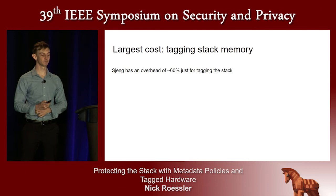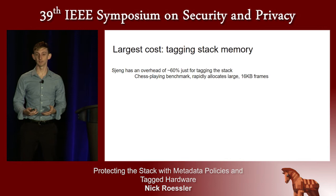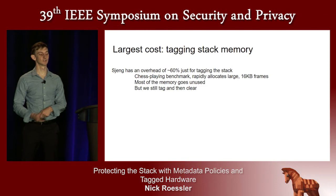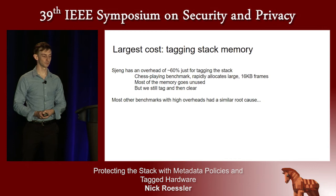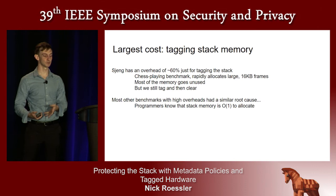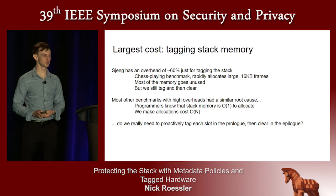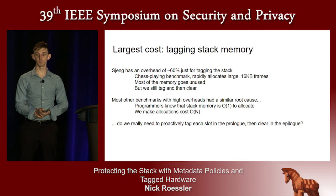The largest cost we noted was tagging stack memory, and the worst offender was Strang, with a 60% overhead just for keeping its stack memory tagged. Strang is a chess-playing benchmark that rapidly allocates large 16-kilobyte frames. These frames contain a buffer sized for the worst-case number of chess moves, but in the common case a much smaller number is actually found due to pruning, so most of the memory goes unused. But our policies still have to tag these large frames in the prologue and clear them in the epilogue. We find that most other benchmarks with high overheads had a similar root cause — they're allocating more stack memory than they actually need. Programmers know that stack memory is cheap, O(1) to allocate, but we're making allocations cost O(N), asymptotically changing the speed of stack allocations.